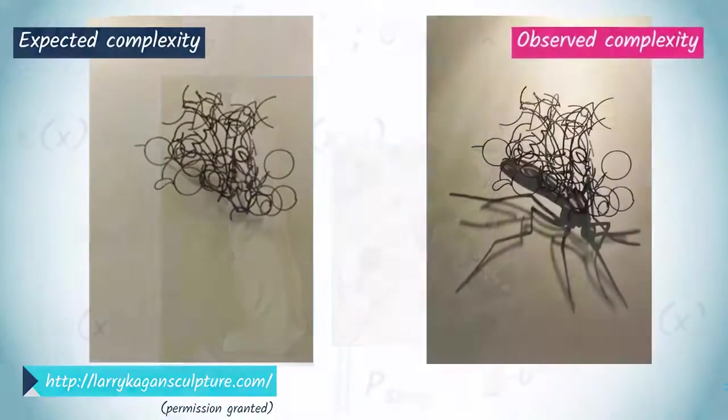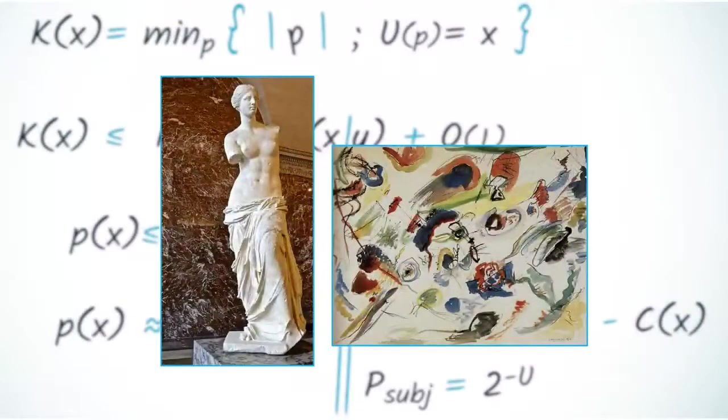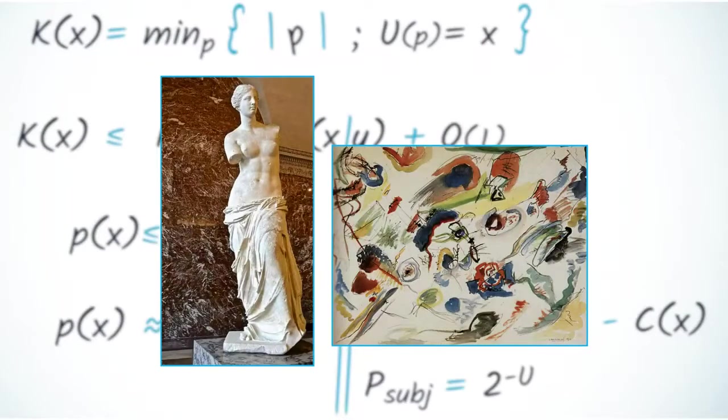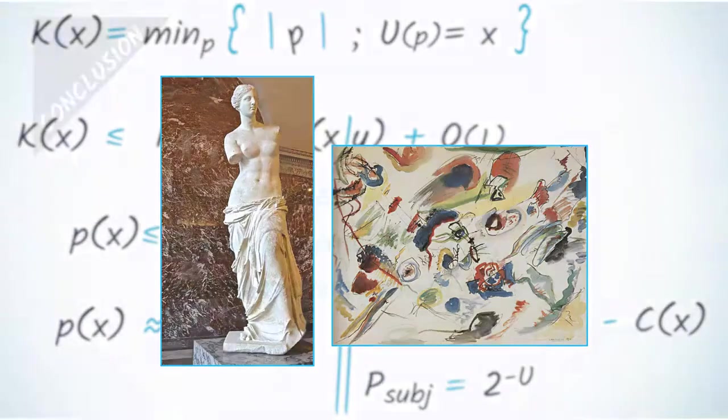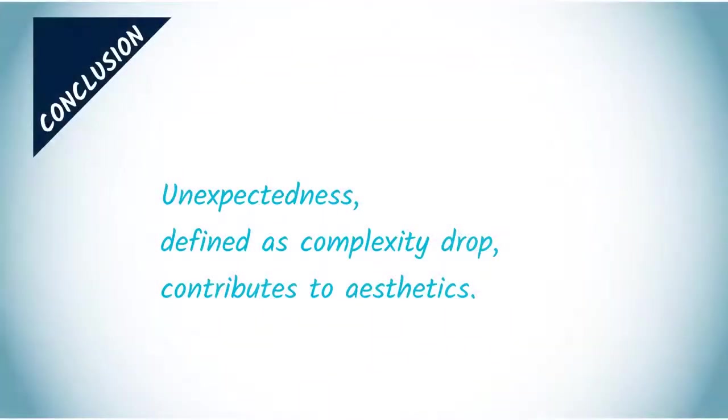Human aesthetic sensitivity will remain a mystery for a long time. We may, however, infer from these examples and from many others that algorithmic simplicity is likely to be involved in it. In conclusion, unexpectedness, defined as complexity drop, contributes to aesthetics.